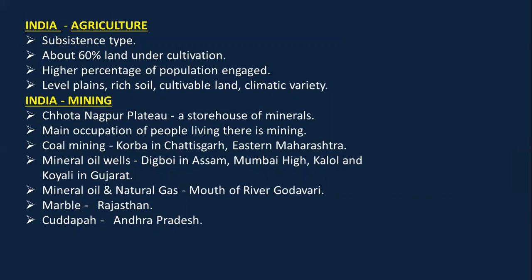Agriculture in India is of subsistence type. Around 60% of India's land is under cultivation. A higher percentage of population is engaged here; we have leveled plains, rich soil, cultivable land, and climatic variety, which leads to good crop production. India also has mining — the Chota Nagpur Plateau is called the storehouse of minerals. In map marking, you must not only mark it but also write its name.